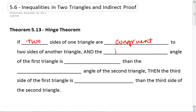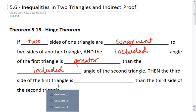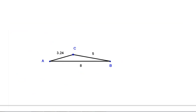and the included angle of the first triangle is greater than the included angle of the second triangle. Let's just make sure we make sense of that. So we have two triangles.